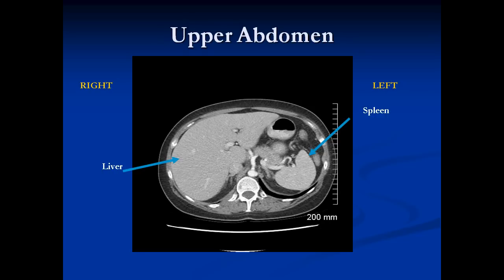This is a view of the upper abdomen. On the right and left sides, we can see the liver on one side and the spleen on the other. When looking at a CT scan, it's like looking from the feet up through the head — the right side is to your left and the left side is to your right. Other images in the upper abdomen include the aorta and these little triangular-shaped structures, which are the adrenal glands, one on each side. This is part of the pancreas, sitting here in the center.